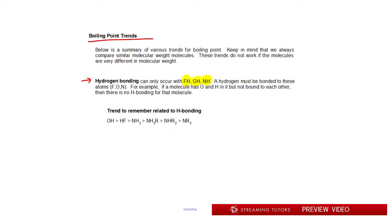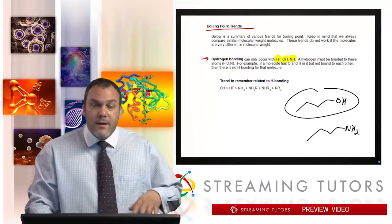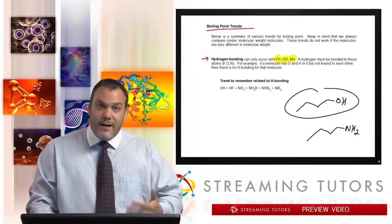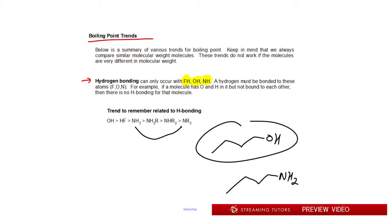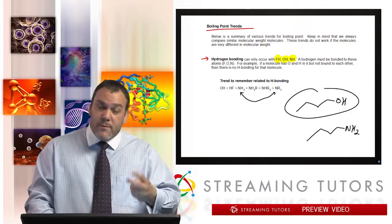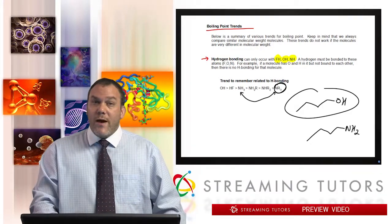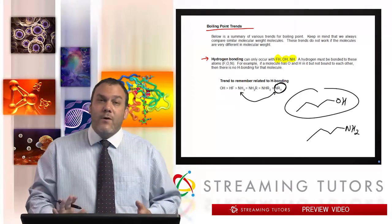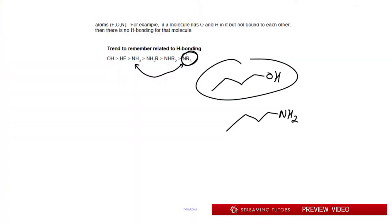The most important trend: if you have an alcohol versus an amine, the alcohol always wins because OH has a better hydrogen bond than NH. For the NH trend, the more H's on nitrogen, the higher the boiling point — NH3 can make three hydrogen bonds, NH2 makes two, and NH makes one. A nitrogen with no H's has no hydrogen bonding, only dipole-dipole.